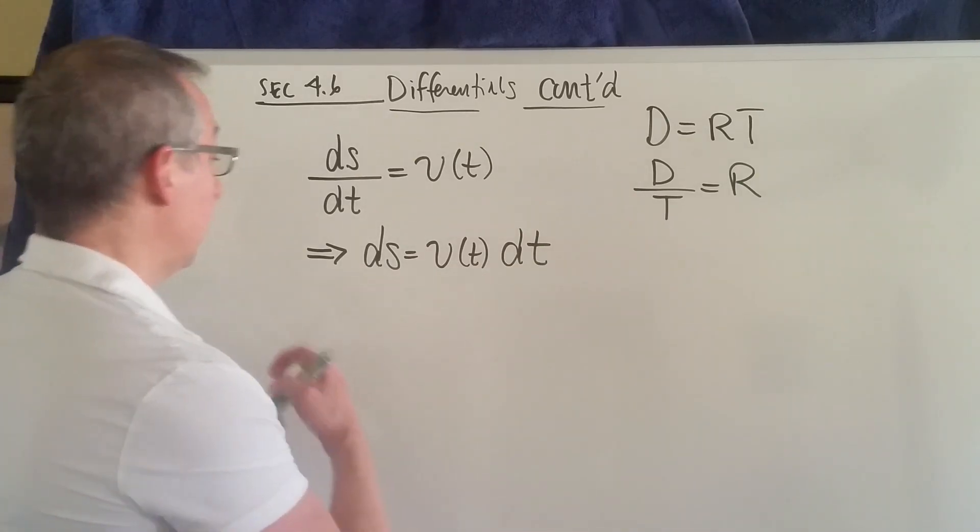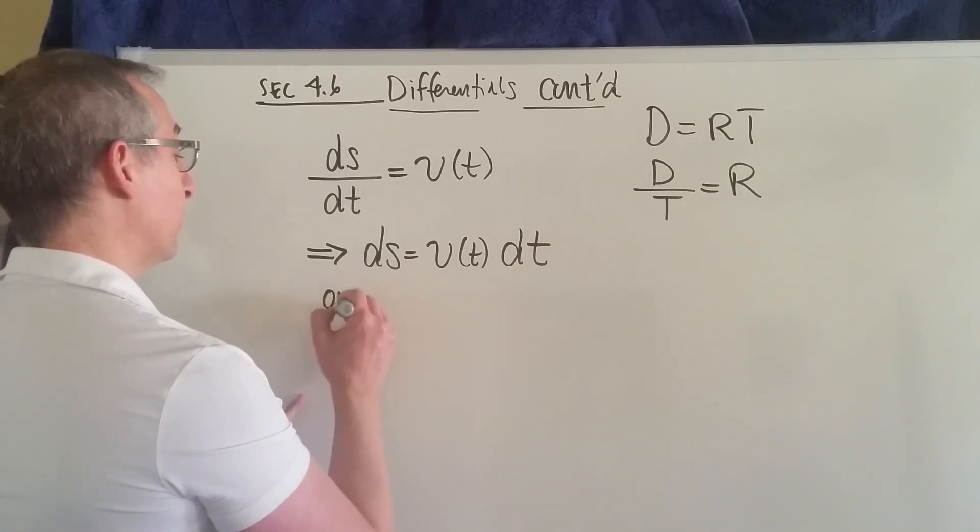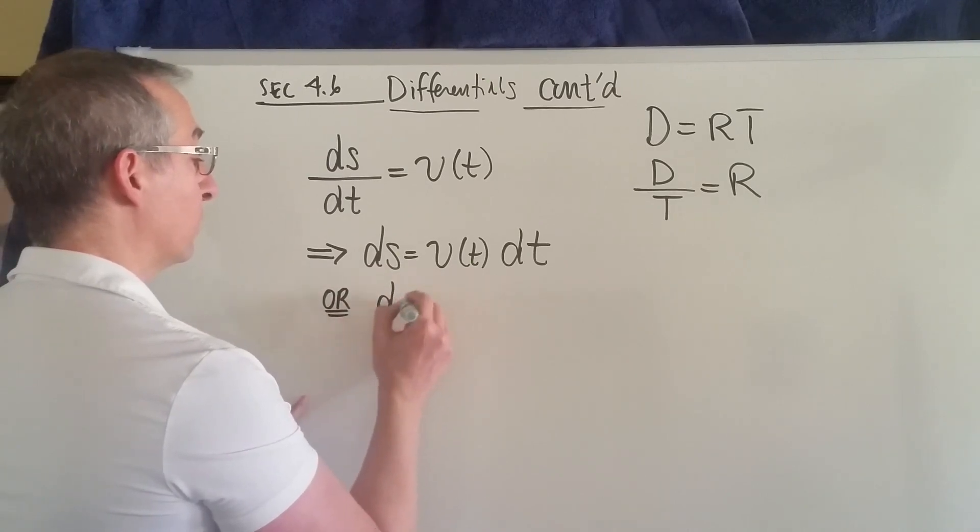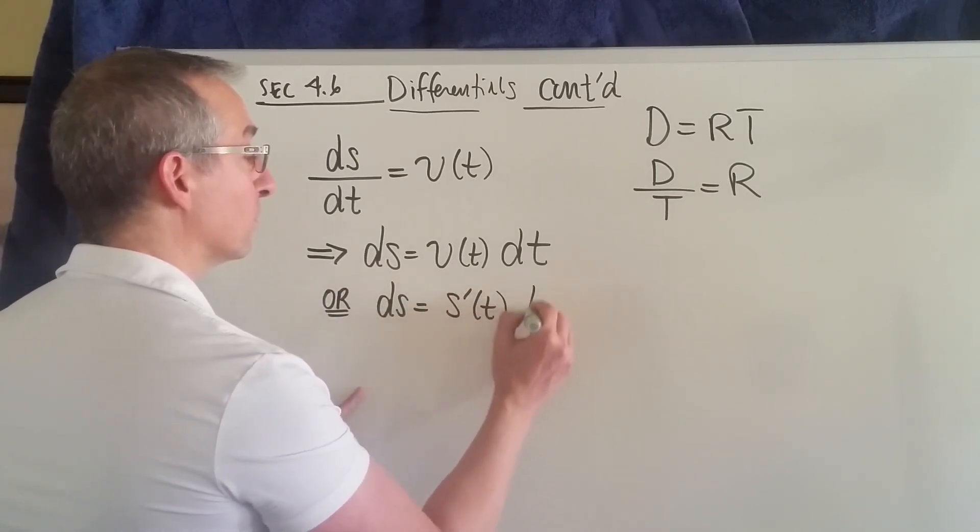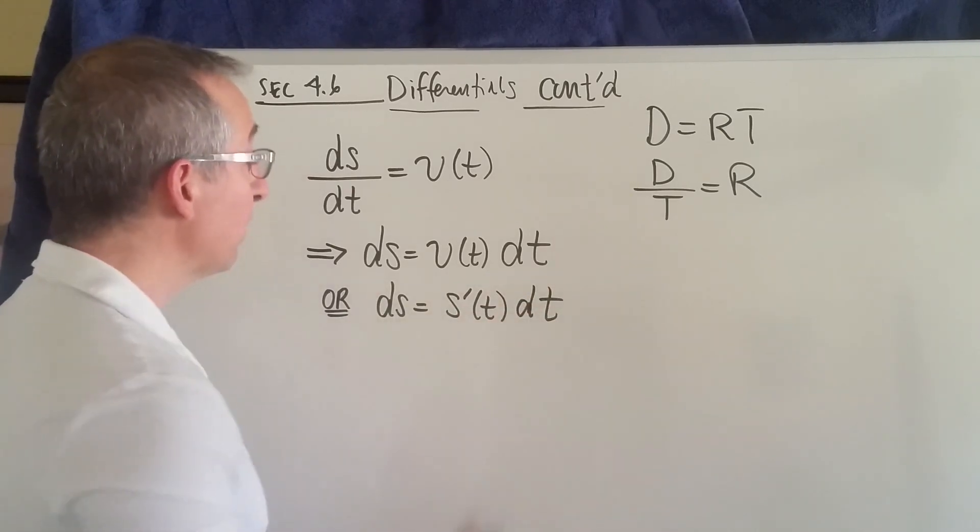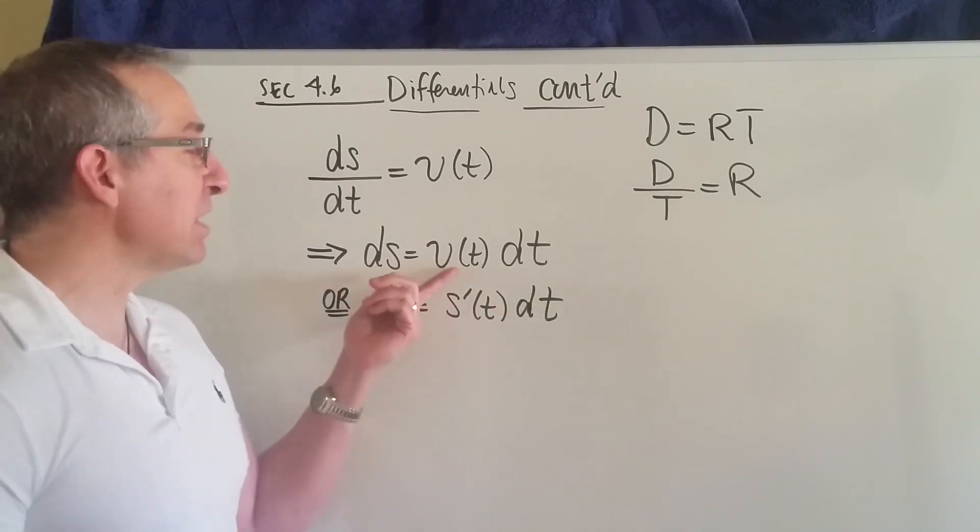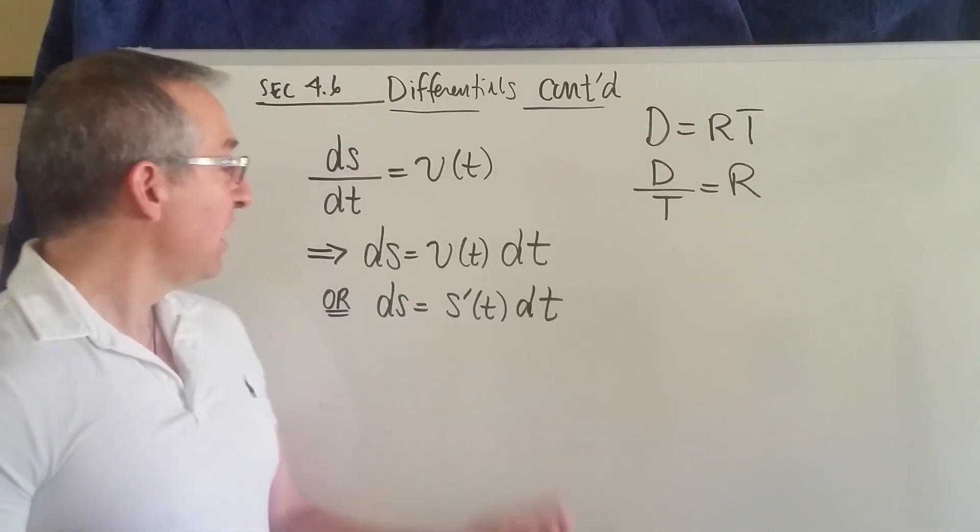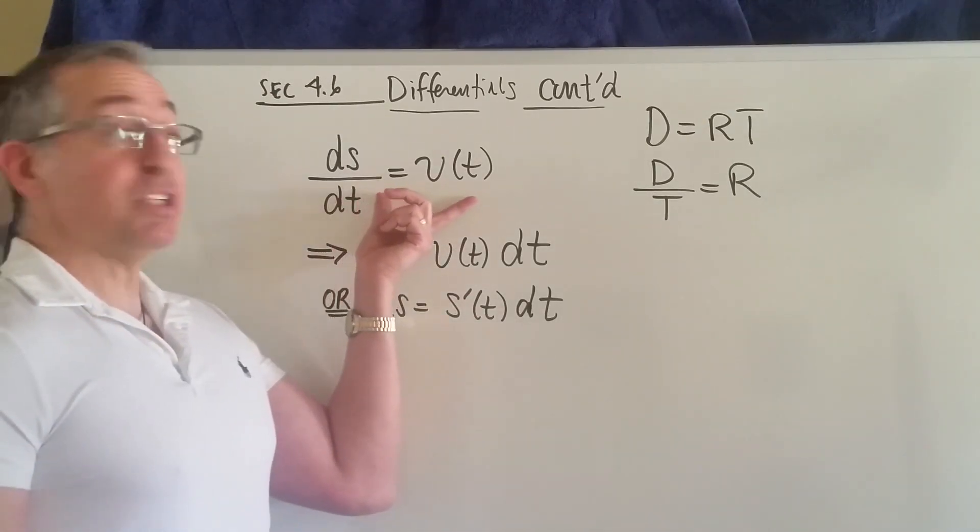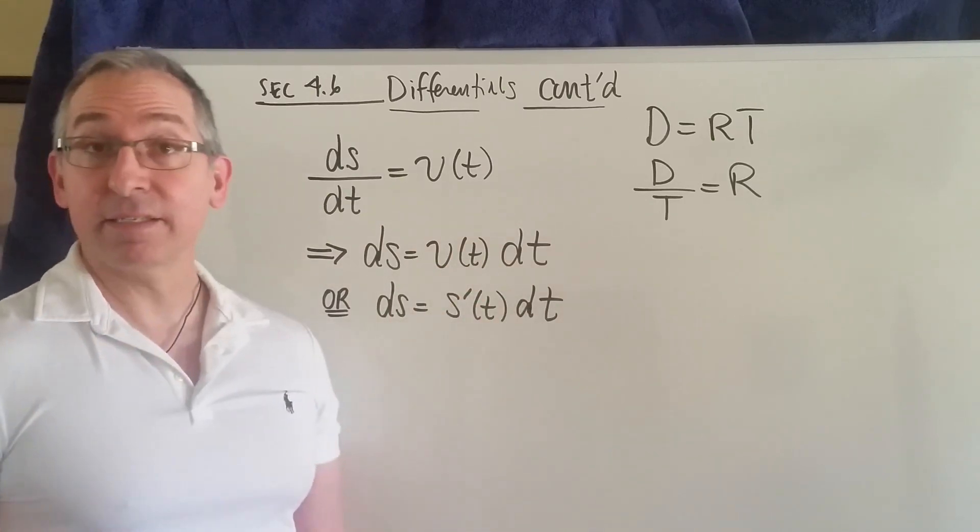Written another way. We could write it this way as well. Because after all, what is velocity but the derivative of position? We've known this for a while now. So I've rewritten the original statement two different ways.